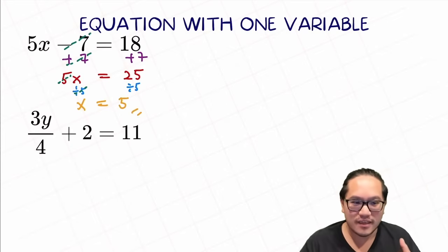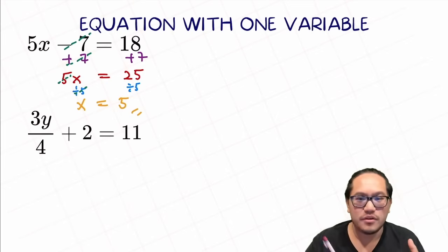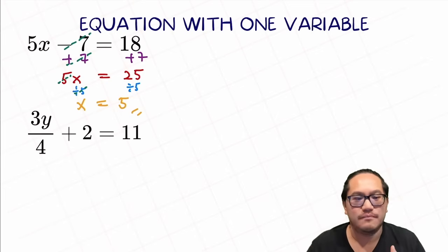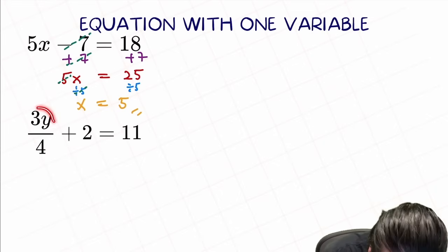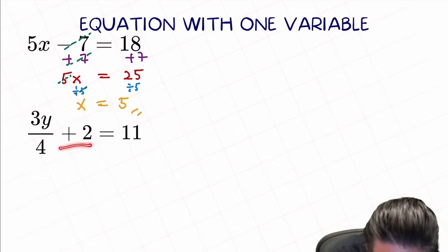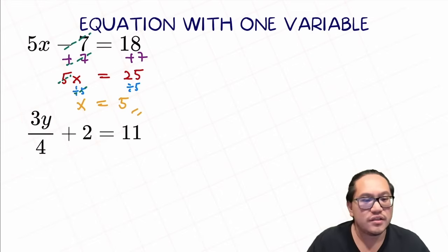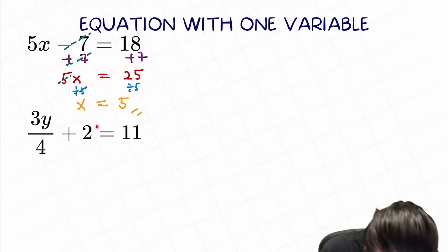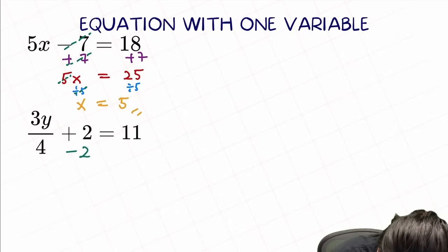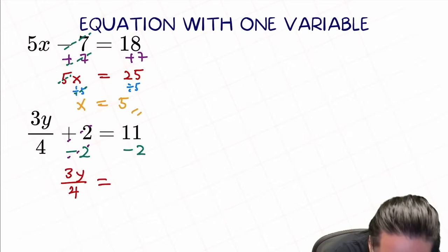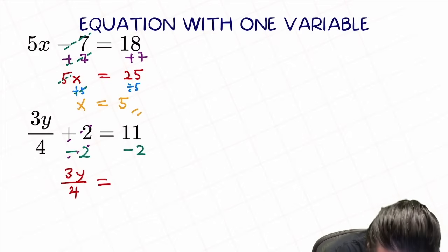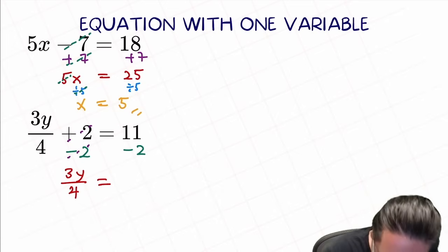It just needs a little more practice to understand this concept — you're pretty much doing the same thing over and over again based on how the equation is set up. So let's try another one. We have 3y over 4 plus 2 equal to 11. Which is the first thing that we can isolate? The plus 2. So we want to minus 2 on both sides to cause the plus 2 to cancel each other out. We're left with 3y over 4 equal to 11 minus 2, equal to 9.